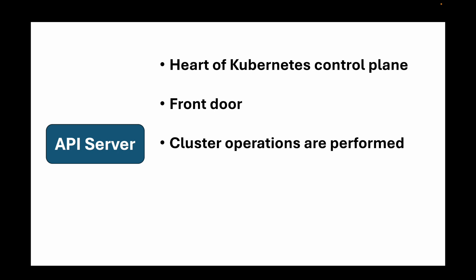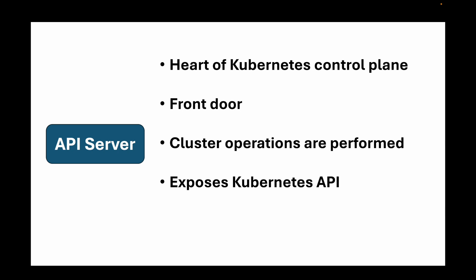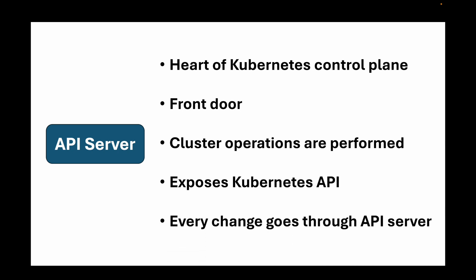The API server exposes the Kubernetes API, so when we use the kubectl tool or any other external tools, the API server is what exposes that API to perform operations. Every change you make — creating a pod, creating a service — goes through the API server. Any request we send goes to your worker nodes through the API server, so this is your front door where all cluster operations are performed.